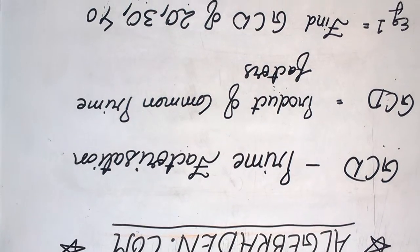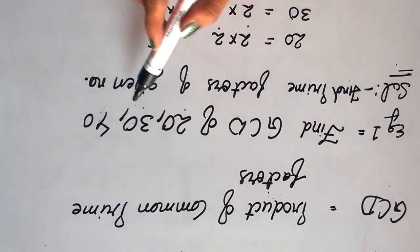For example, find GCD of 20, 30, and 40.